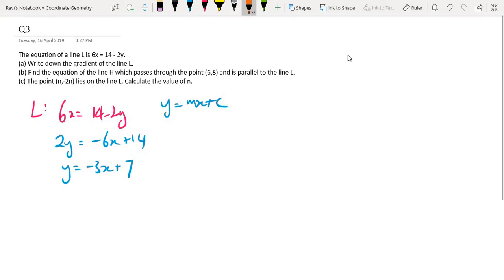So this basically means that this is my gradient and this is my y-intercept. So for part A, the answer m equals negative 3. That is A, the gradient of the line L.